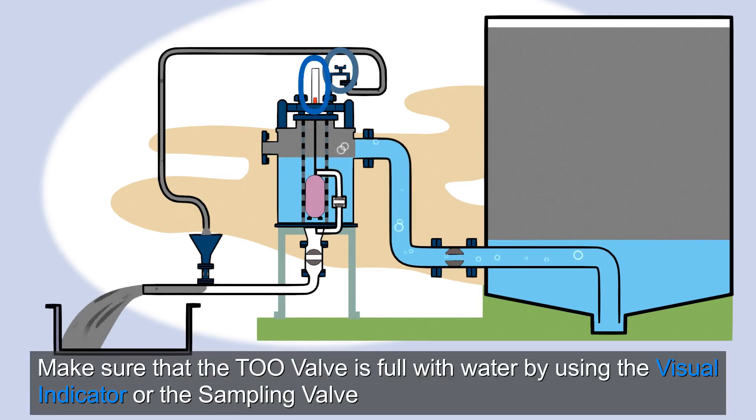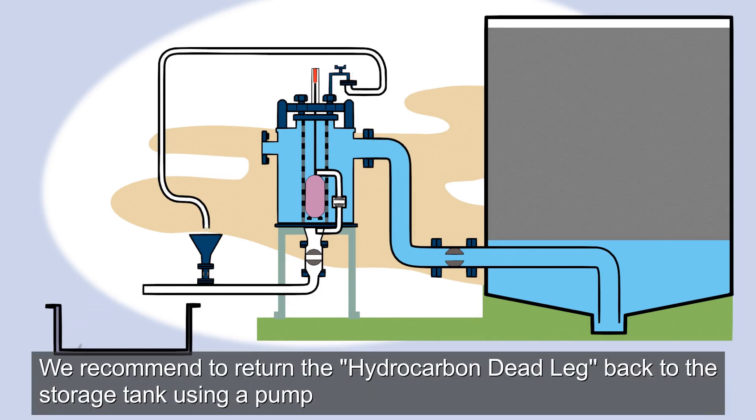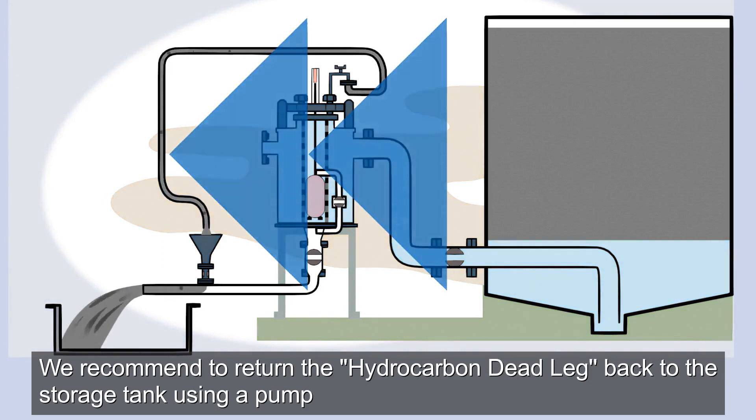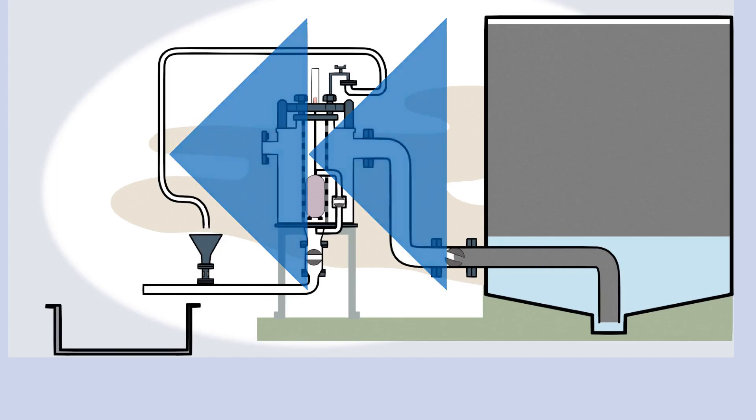Make sure that the TOO valve is full with water by using the visual indicator or the sampling valve. We recommend returning the hydrocarbon deadlag back to the storage tank using a pump. This will prevent costly wastage from the hydrocarbon deadlag and will also prevent hydrocarbon products from entering the terminal's wastewater piping system.